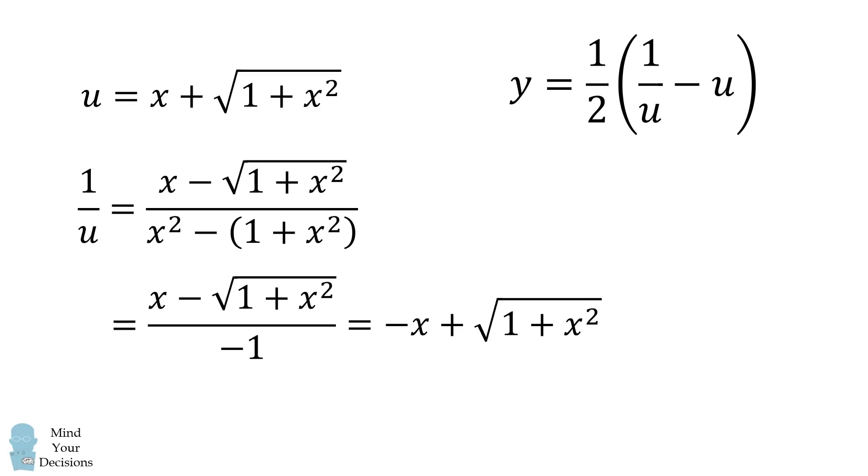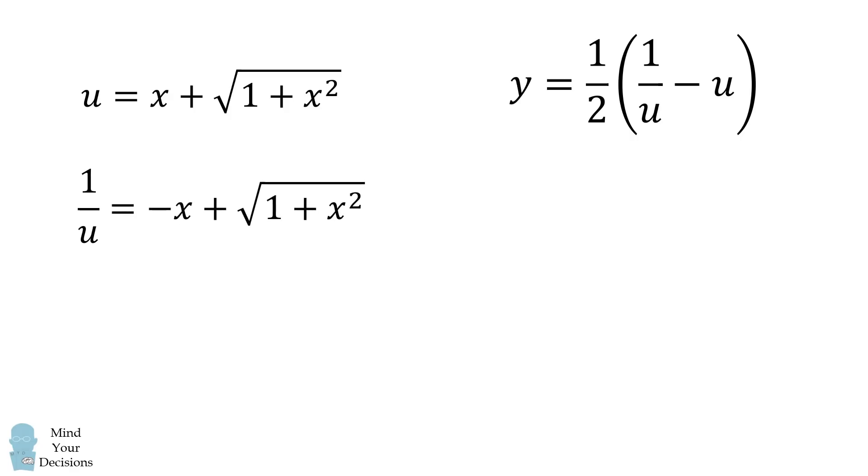Therefore, 1 over u is equal to the following: negative x plus the square root of 1 plus x squared.